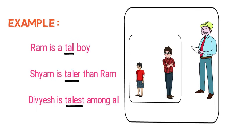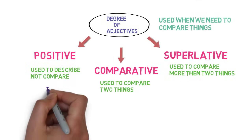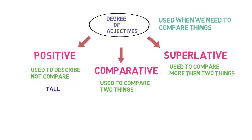Looking back at the chart: tall is the positive degree, taller is the comparative degree, and tallest is the superlative degree. Remember — the positive degree is not for comparing things; it just gives information or description about the noun. The comparative degree is used to compare 2 things, and the superlative degree is used to compare more than 2 things.